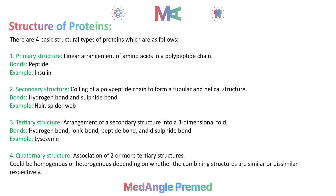Quaternary structure has two types. If we have two subunits of the same type, then this is called homogenous quaternary structure.